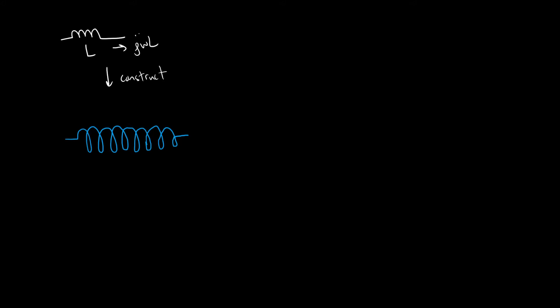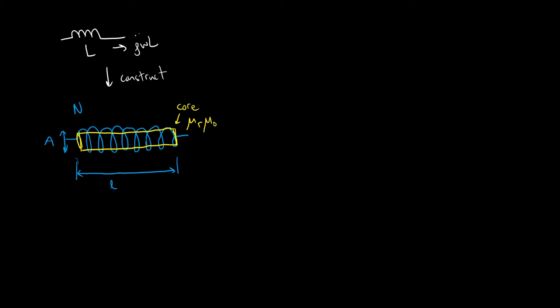With this coil, there are a few parameters we're interested in: the length of the coil, how many turns N — how many loops of wire — and the cross-sectional area. We assume this is a cylinder. Additionally, you can add materials inside this loop to increase the inductance. The material you choose has a strong impact on the properties of this solenoid. This is what we call the core, and the core has some magnetic permeability μr, while free space has permeability μ0.